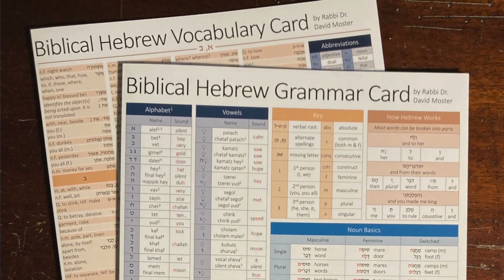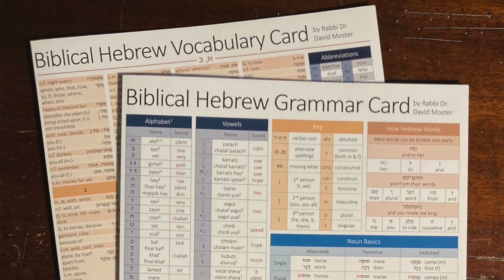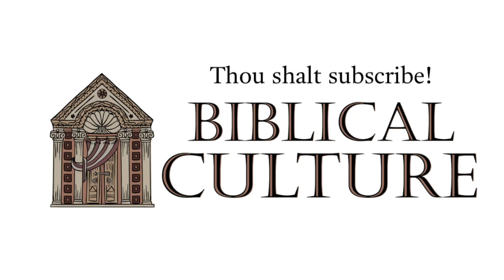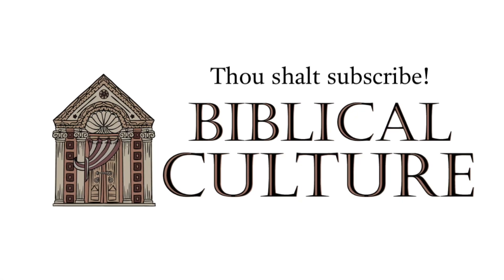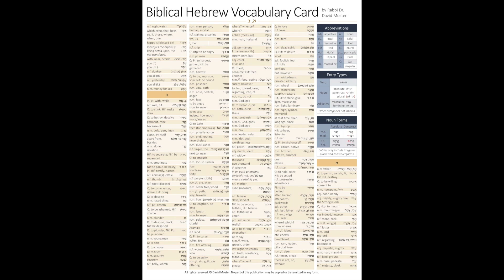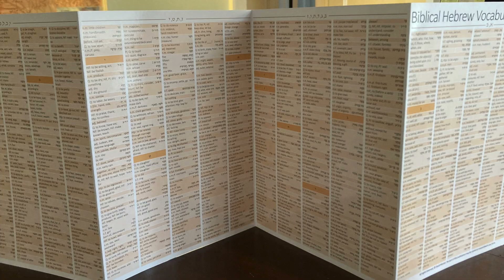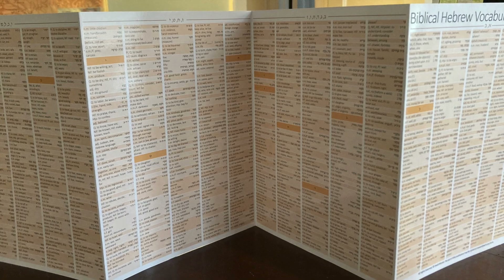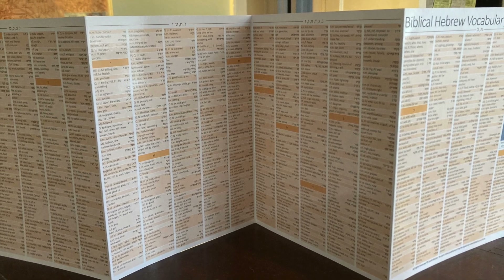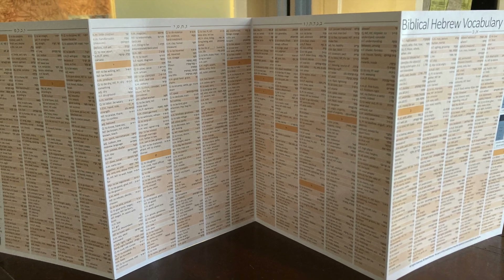Let's take a look first at the Biblical Hebrew vocabulary card. The vocabulary card is the most straightforward. Depending on how you count, it has 1,600 or more of the most common words in the Tanakh, the Hebrew Bible.